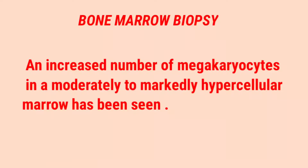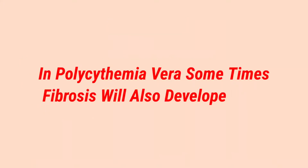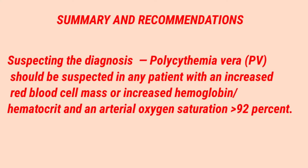Bone marrow biopsy shows an increase in megakaryocytes and a moderately to markedly hypercellular marrow — sometimes panmyelosis. All types of cells are increased in bone marrow, mostly myeloid-derived cells. Cellularity is also increased, and sometimes polycythemia vera can develop fibrosis in the bone marrow.